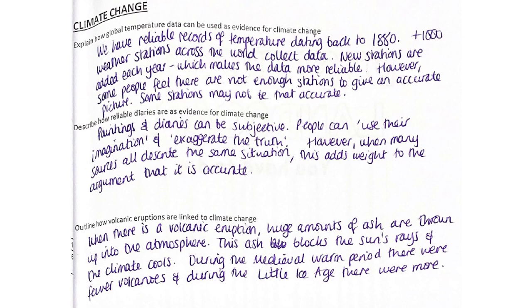There's a question about how reliable diaries and paintings are — we've talked about that. We've also talked about volcanoes with their ash blocking the sun's rays and giving us a cooler climate.